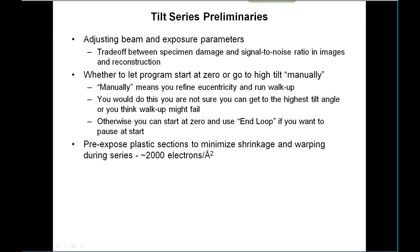One of the decisions you have to make is whether to let the program start at zero or go to high tilt manually. By manually, we mean that you would make sure the eucentricity is refined before you start, and you would either run the walk-up or tilt-up by pushing the button. You might do this if you're not sure you can get to the highest tilt angle or if you think the walk-up might fail. Otherwise, you can start at zero and use the end loop button if you want to pause after the first tilt is reached and make sure things are good.